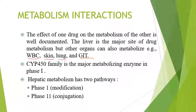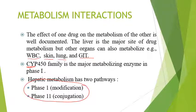Now let us talk about cytochrome P450. The cytochrome P450 family is the major metabolizing enzymes in phase one. There are two phases of hepatic metabolism — hepatic meaning liver-based metabolism. It generally takes place in two phases: phase one, called modification, and phase two, called conjugation.